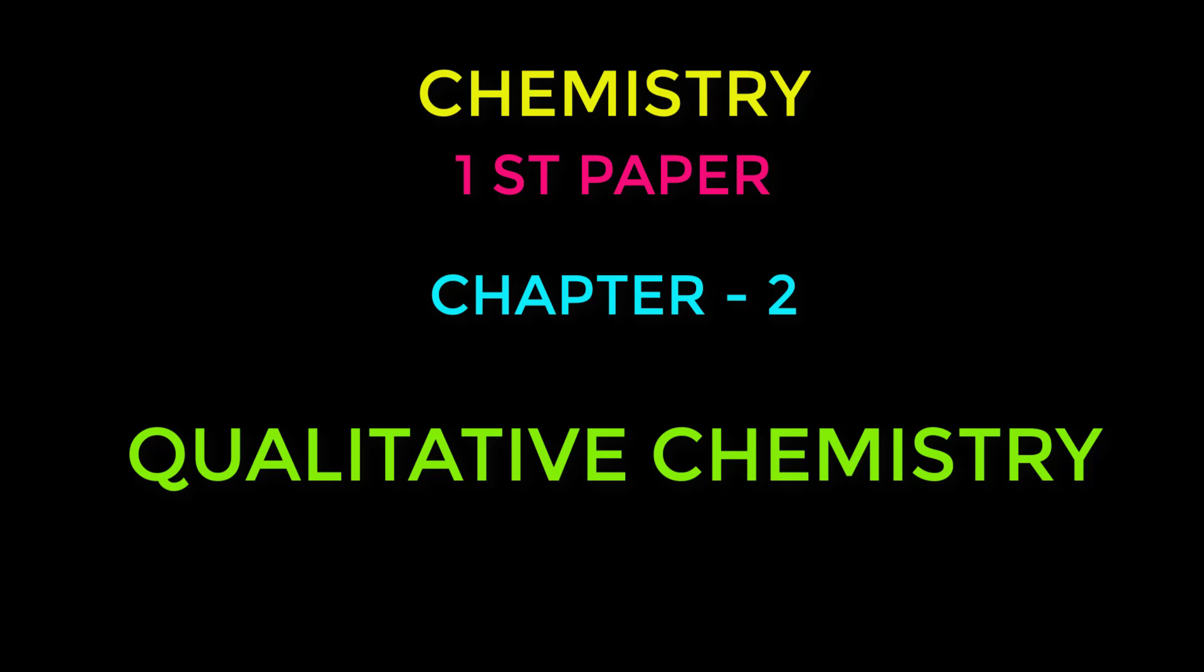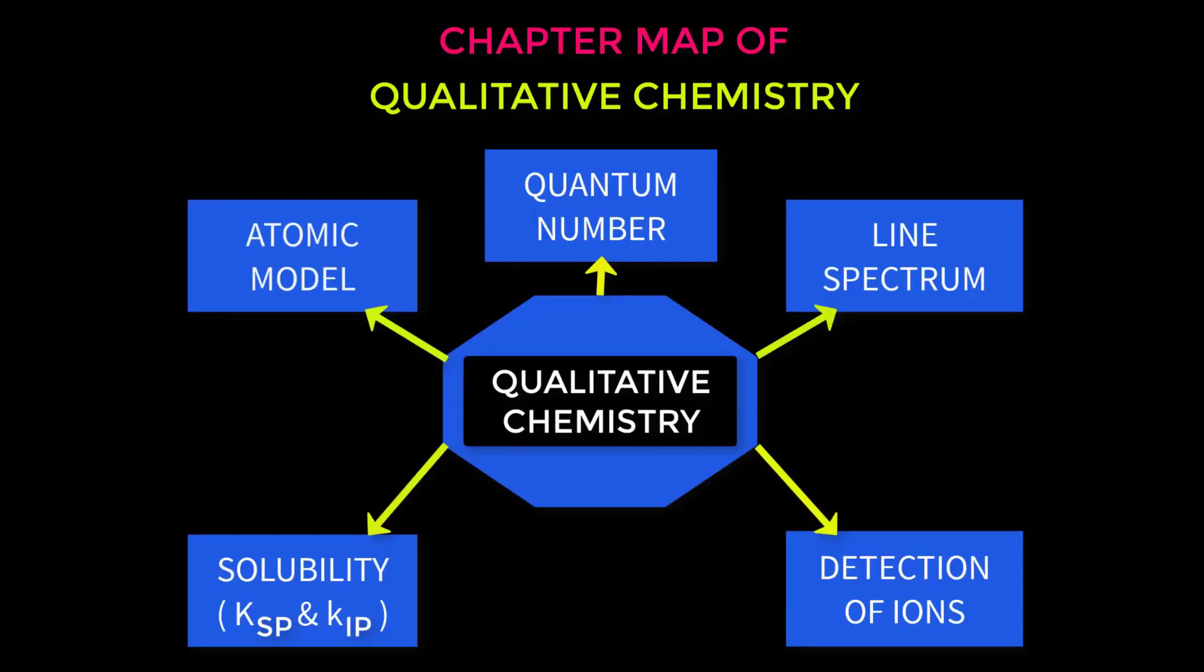Actually at HSC level, the prevalence of physics and chemistry is so high that many students get nervous. But if they can create a chapter map on the chapter they are going to read, then it will be very helpful for them to understand the chapter clearly.